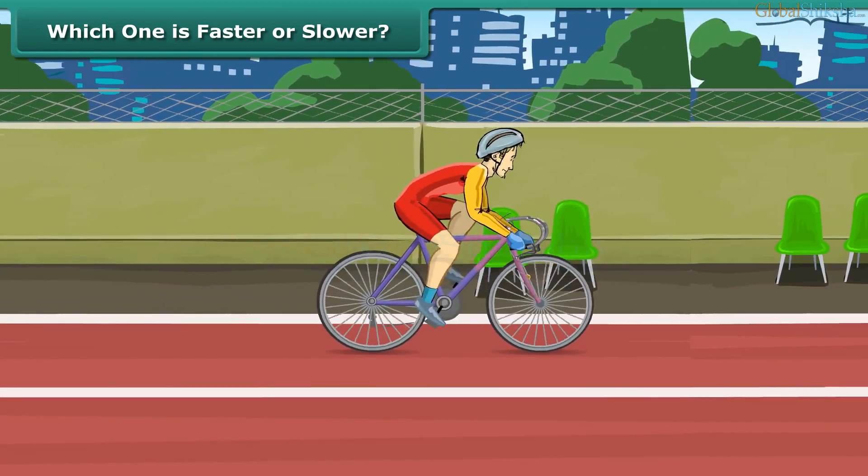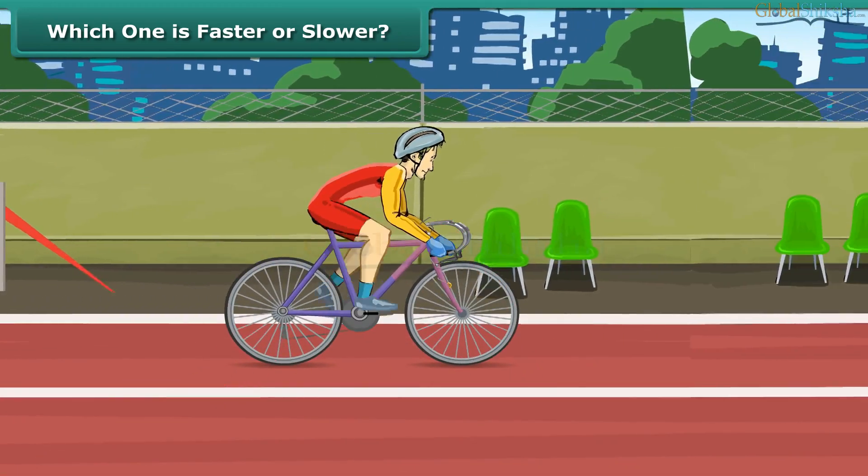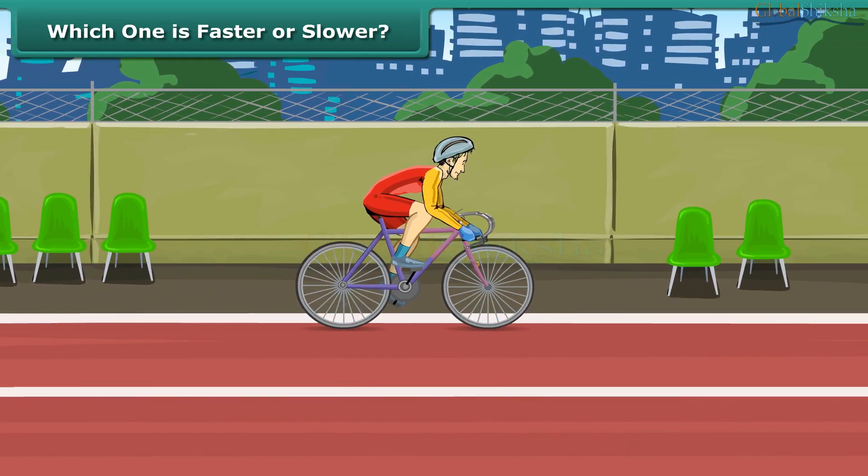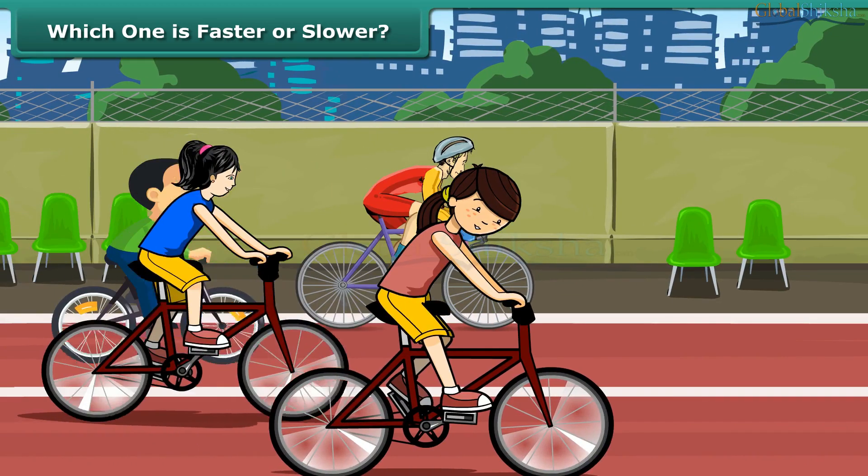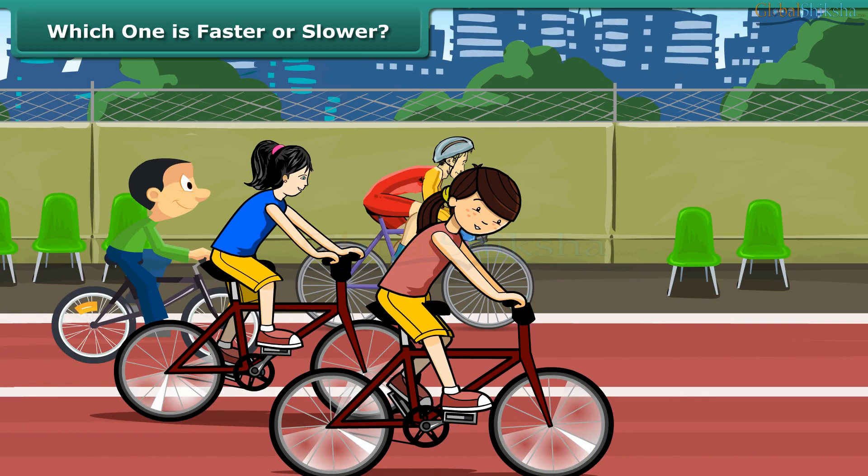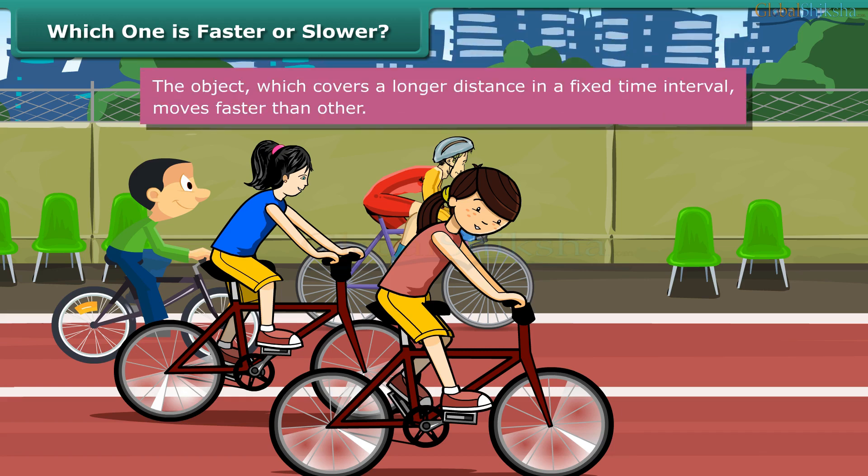Suppose after 10 minutes, one cyclist reaches the finishing line. This means that the winner covered the distance of 1000 m in 10 minutes. This also means that all the others who reached the finishing line later covered less than 1000 m in 10 minutes and hence lost the race. So, we can say that the object that covers a longer distance in a given time interval than other is faster.